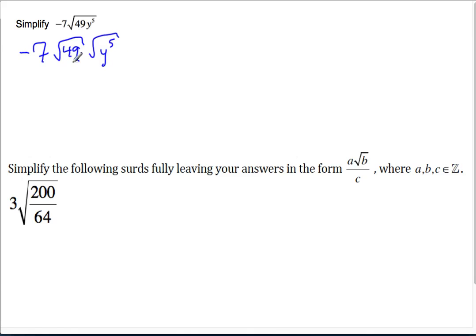So 49 we should recognize as a perfect square, is 7 squared. So negative 7 times the square root of 49, which is positive 7.